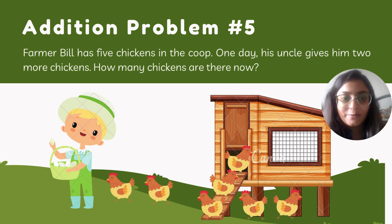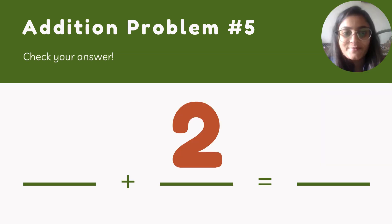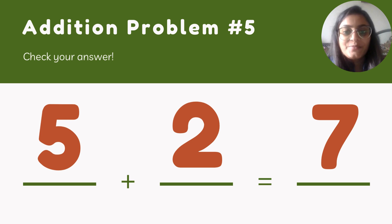Addition problem number five: Farmer Bill has five chickens in the coop. One day his uncle gives him two more chickens. So how many chickens are there now? Let's count the total number of chickens: one, two, three, four, five, six, seven. That means there are seven chickens in total. So five chickens plus two chickens add up to seven chickens.